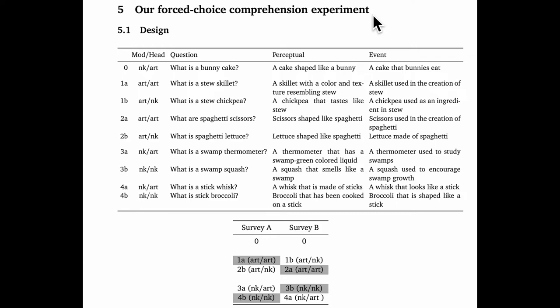What we did was also a comprehension experiment, but it was meaningfully different. Ours can be described as a forced choice comprehension experiment. As participants, you were prompted with a novel compound like stew skillet, but I constrained you to choose between two options, one connecting with a perceptual reading and the other connecting with an event-related reading.